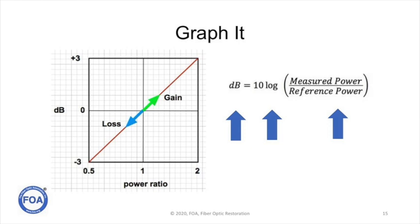It's easier to see if you graph it. If you have a power ratio of 1 on the lower scale, that's 0 dB. If you have twice as much power, power ratio of 2, that is plus 3 dB gain. If you have half as much power, that's minus 3 dB, and that's loss. So it's really pretty simple.